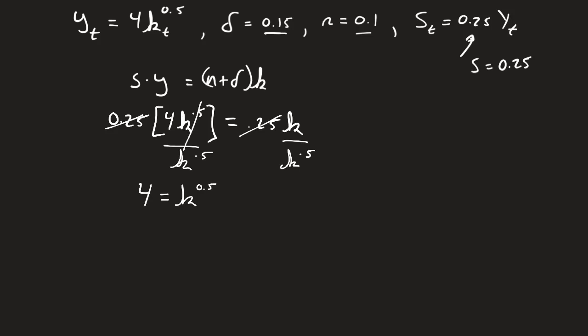How do we get rid of something raised to 0.5? We're going to have to square it, because when I multiply 2 times 0.5, we're going to get to 1, so that's going to go away. This tells us my k, which we can now add a star, is equal to 16. So we've solved for k star equals 16.